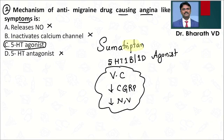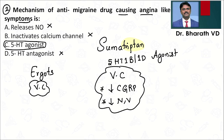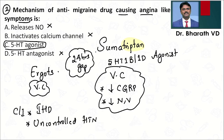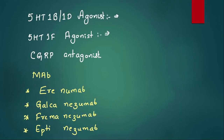Triptans are drug of choice for acute attack of migraine. Compared to ergots — ergots also cause vasoconstriction but don't decrease CGRP and don't decrease nausea and vomiting. Both ergots and triptans should not be given together; there should be a gap of 24 hours. Both are contraindicated in ischemic heart disease and uncontrolled hypertension because vasoconstriction will worsen these conditions.